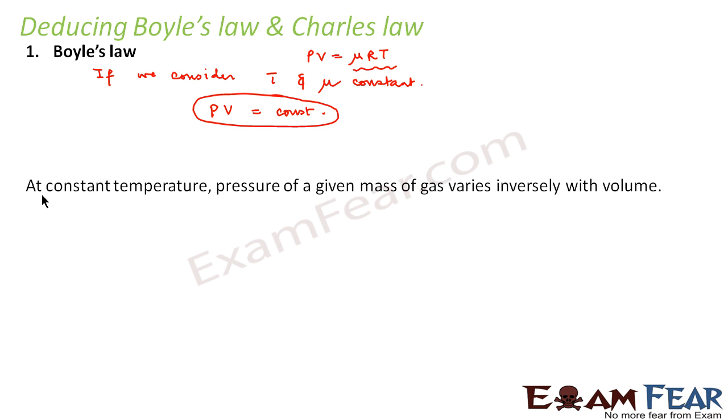So Boyle's law states that at constant temperature, pressure of a given mass of gas varies inversely with volume. So there is inverse relation between P and V at constant temperature. So we arrive at Boyle's law from the perfect gas equation.